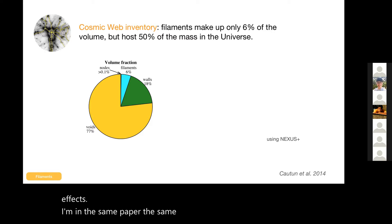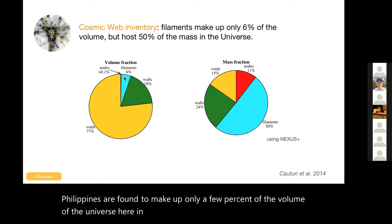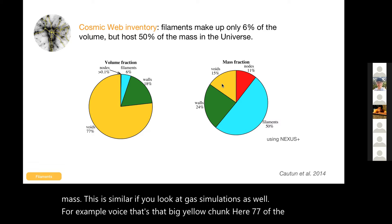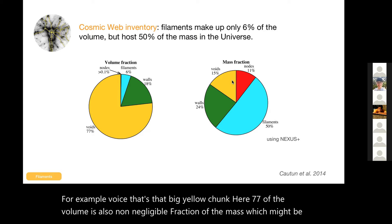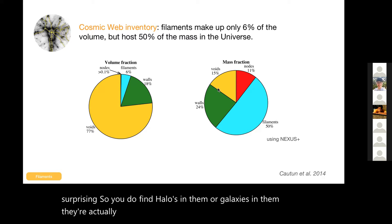In the same paper, using the same dark matter simulation and nexus, filaments are found to make up only a few percent of the volume of the universe here in blue, but they have hosted about 50% of the mass. This is similar if you look at gas simulations as well. For example, voids - that's that big yellow chunk here, 77% of the volume - it's also a non-negligible fraction of the mass which might be surprising. So you do find halos in them or galaxies in them. They're actually really interesting low mass things that have not been environmentally affected. So they're also studied in detail by void surveys.